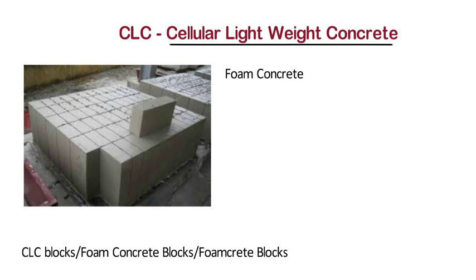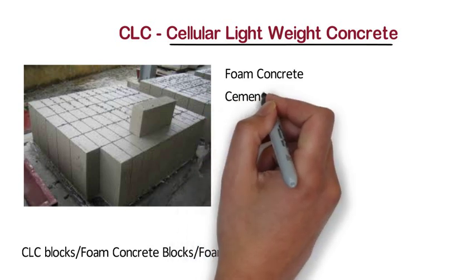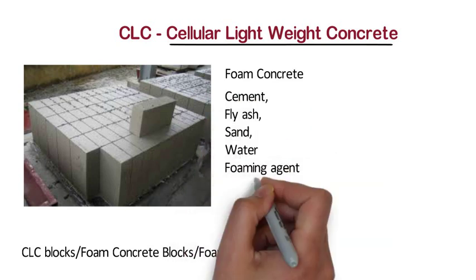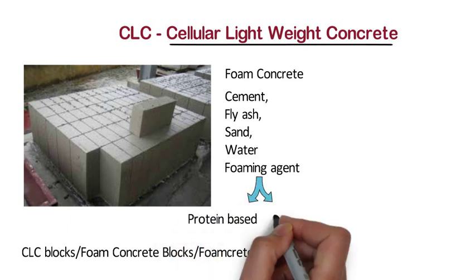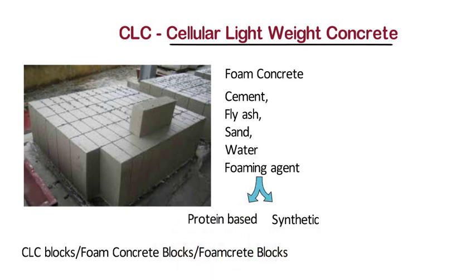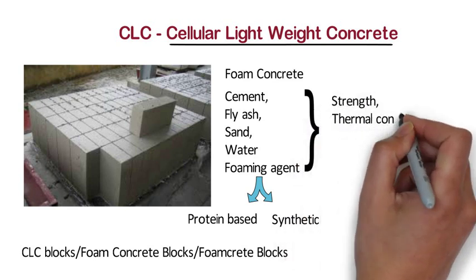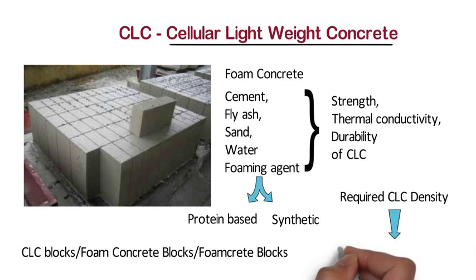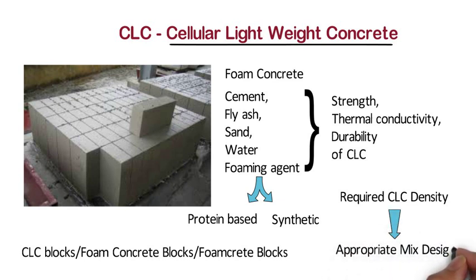Cellular lightweight concrete is a mixture of cement, fly ash, sand, water and foaming agent. The foaming agent can be protein based or synthetic. The proportion of these raw materials will decide the required properties of cellular lightweight concrete — that is strength, thermal conductivity or durability. Also depending on required CLC density and variance, an appropriate mix design is selected.